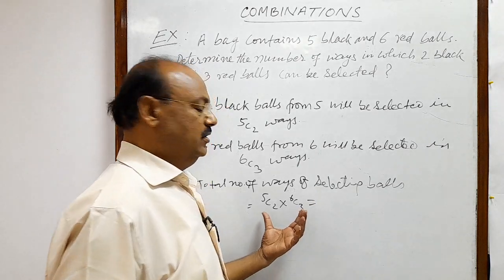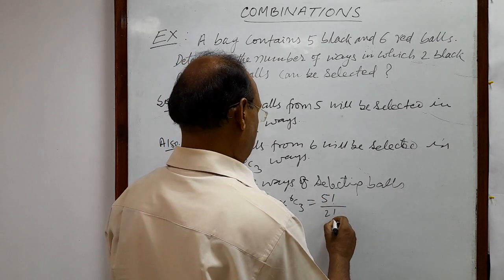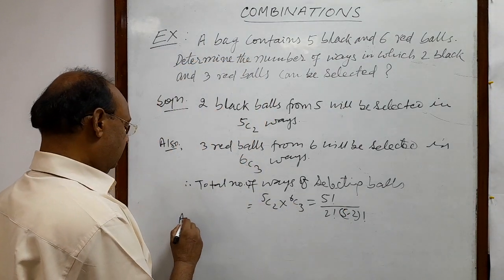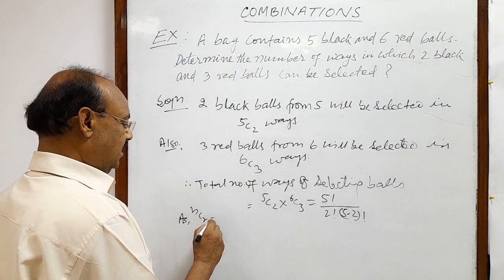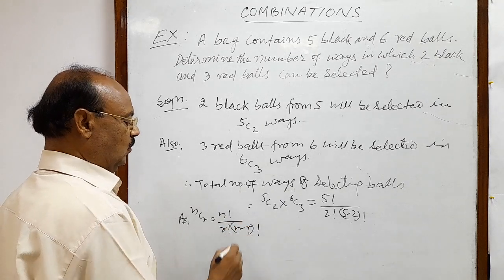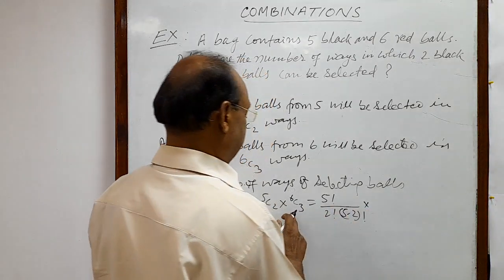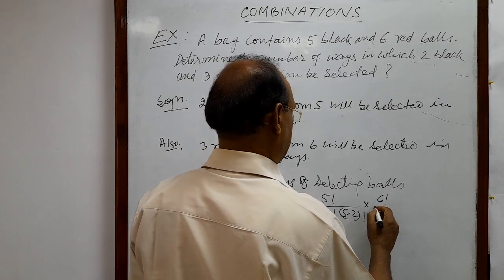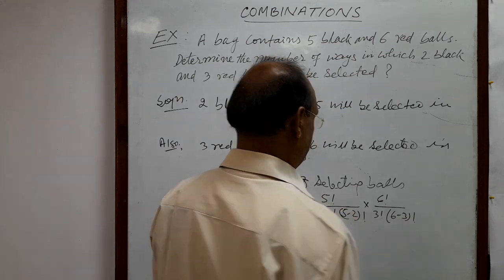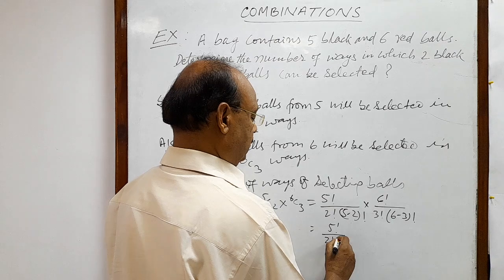So let us simplify it, we will get the answer. 5C2 is 5 factorial by 2 factorial into 5 minus 2 factorial. Here we are using a formula: nCr is equal to n factorial by r factorial into n minus r factorial. So by this formula we can evaluate 5C2 here. Similarly, 6C3 is 6 factorial by 3 factorial into 6 minus 3 factorial. So this is 5 factorial by 2 factorial into 3 factorial.